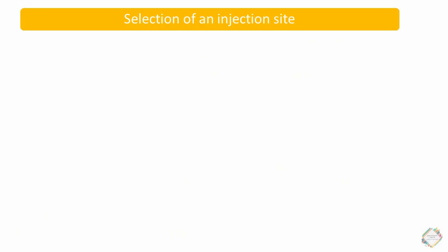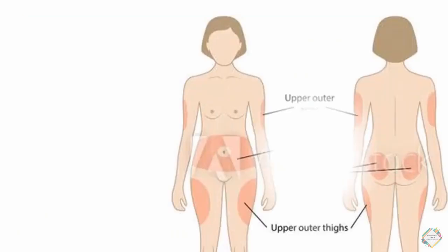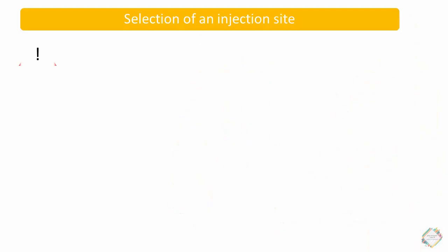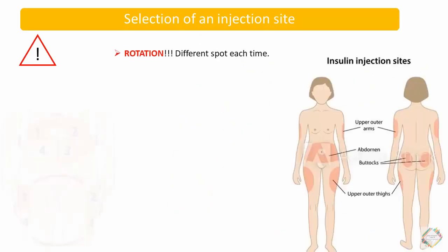There are mainly four sites at which insulin should be administered: the upper outer arms, abdomen, buttocks, and upper outer thighs. Each time we administer insulin, we have to select a different spot — there should be rotation each time. This mainly avoids the chances of lipodystrophy, one of the main adverse drug reactions associated with insulin administration.